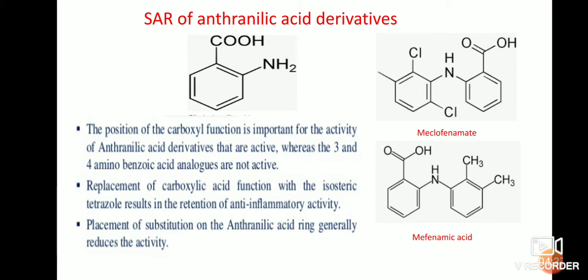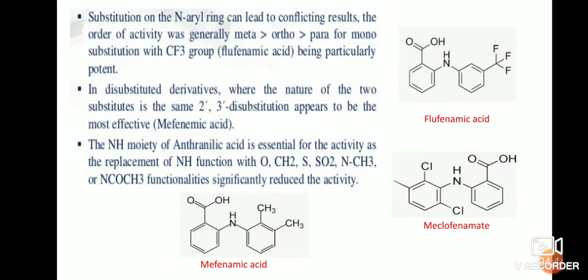Substitution on the anthranilic acid ring generally reduces the activity. Substitution on the N position can lead to variable results — for example, if a CF₃ group is attached at the N position it may affect the activity. If attached at the meta position it is more active than the ortho position.